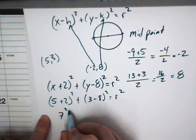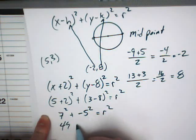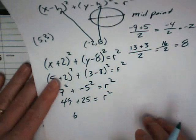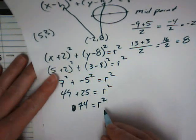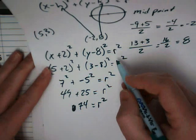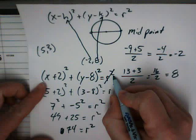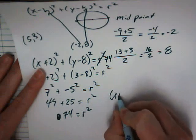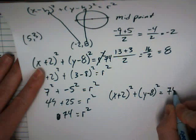And you've got 7 squared plus negative 5 squared equals r squared, 49 plus 25. This might be a 60, oops, it'd be 74. And that's the r squared value. So, you just replace the r squared with the 74. So, your final answer would be (x plus 2) squared plus (y minus 8) squared equals 74.